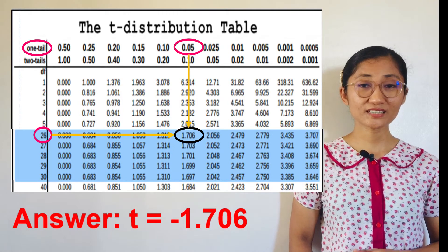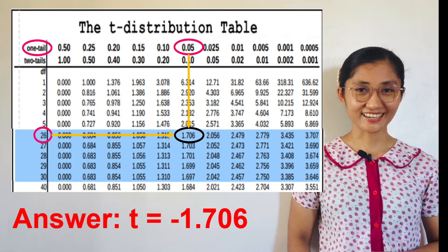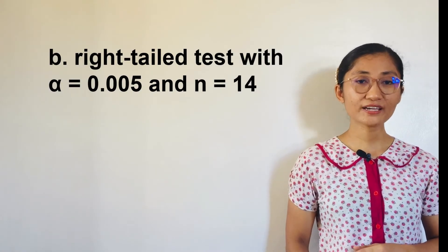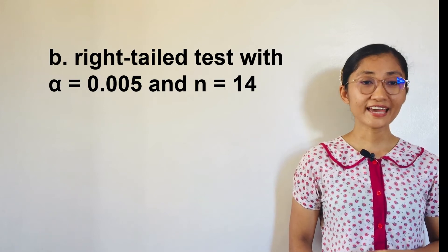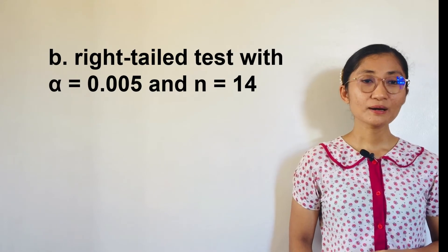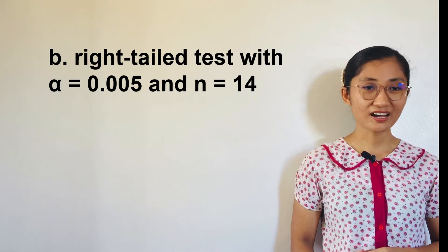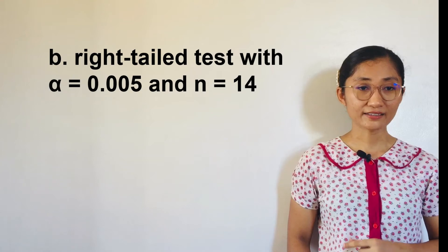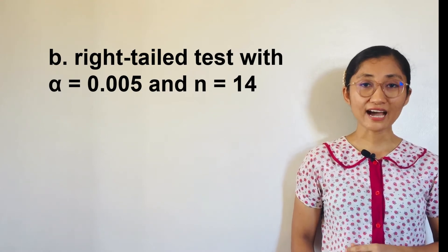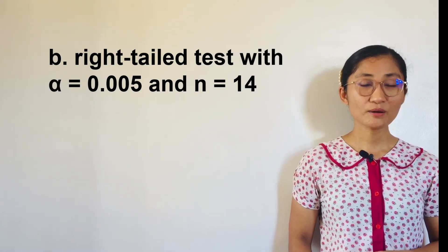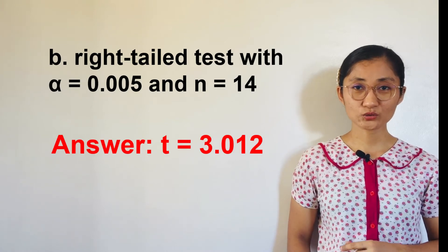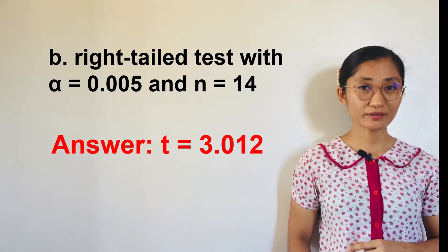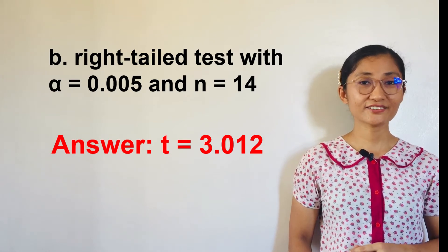It is negative because it comes from a left-tailed test. For letter B: Right-tailed test with alpha equals 0.005 and n equals 14. Using the T-table and looking at the alpha for the one-tailed test row, T equals positive 3.012. The positive sign remains since it is a right-tailed test.